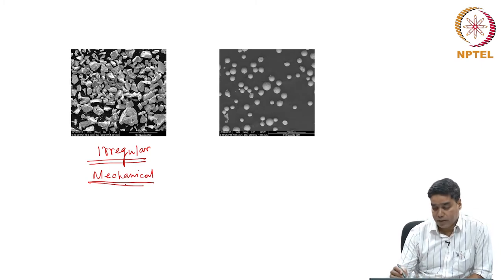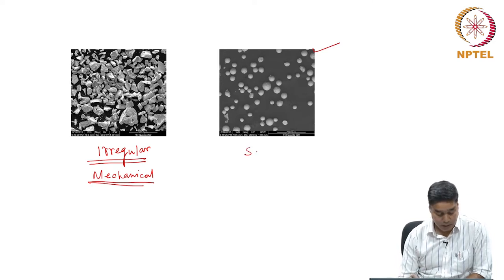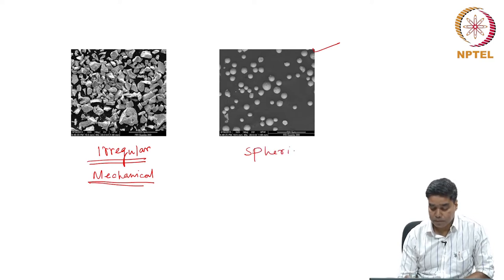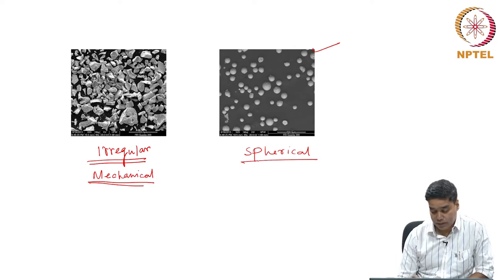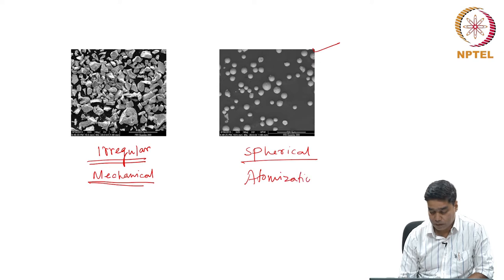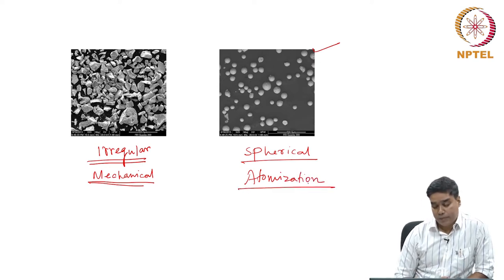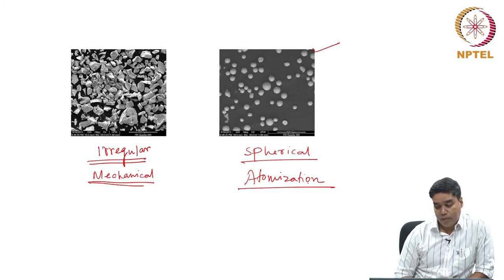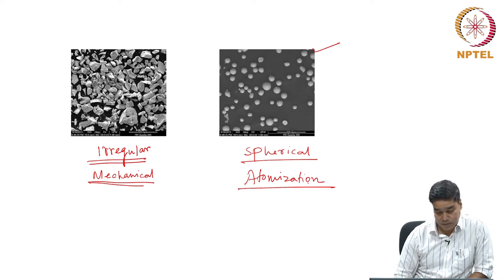On the other hand, if you see this image, the particles are spherical, and this is something that we got in the atomization process. Like that, every process can generate different types of particle shape, size, size distribution and so on.